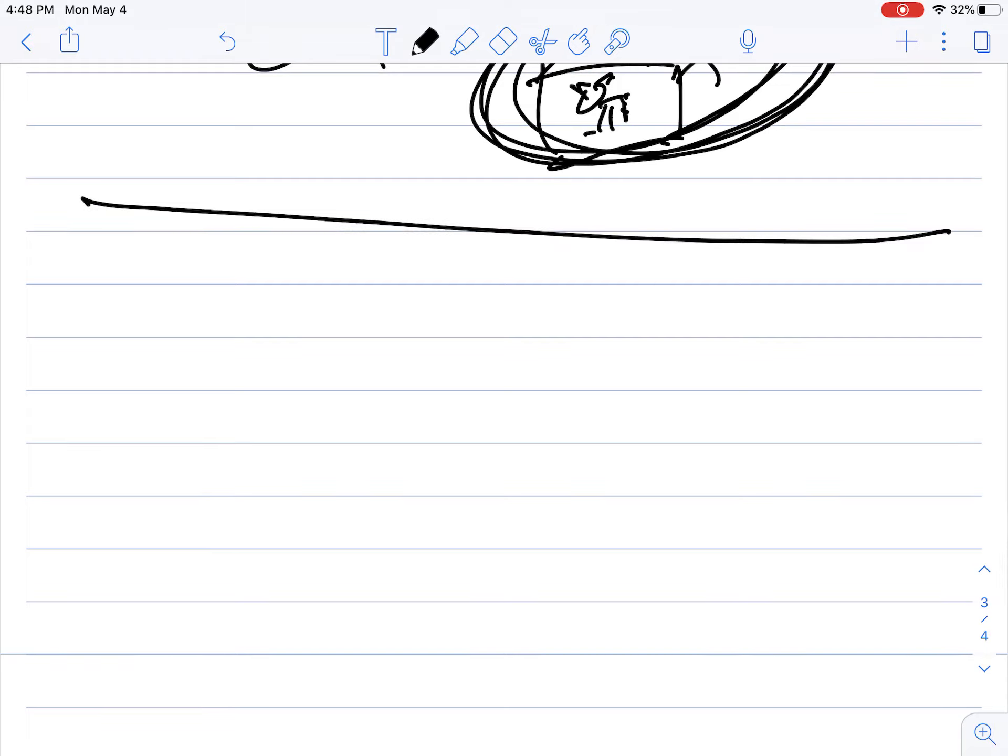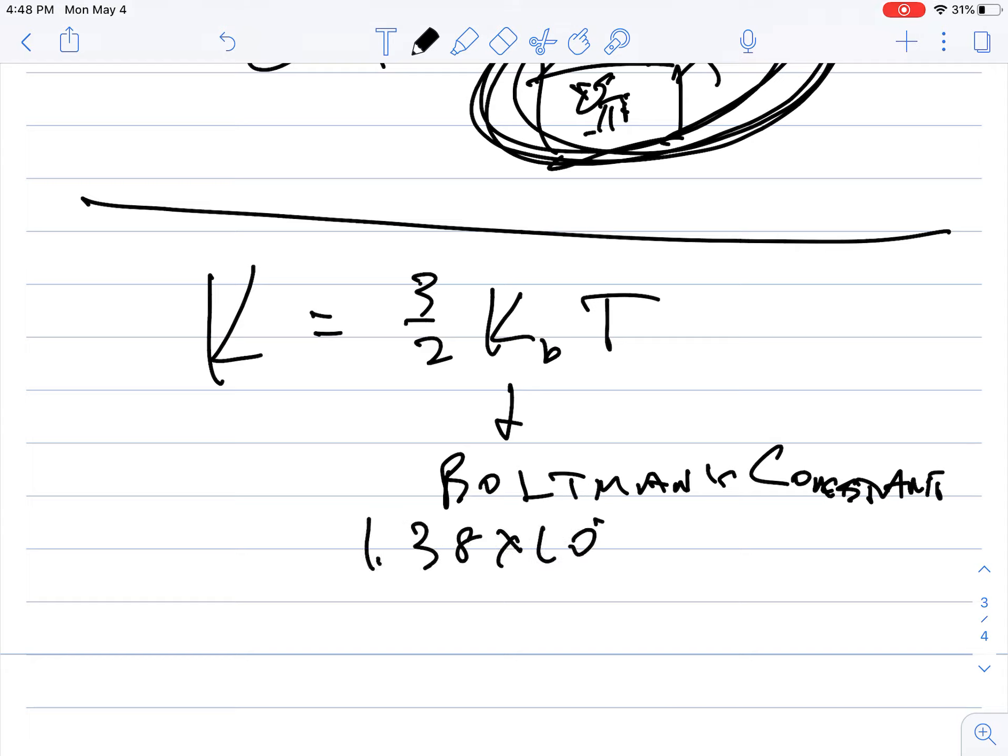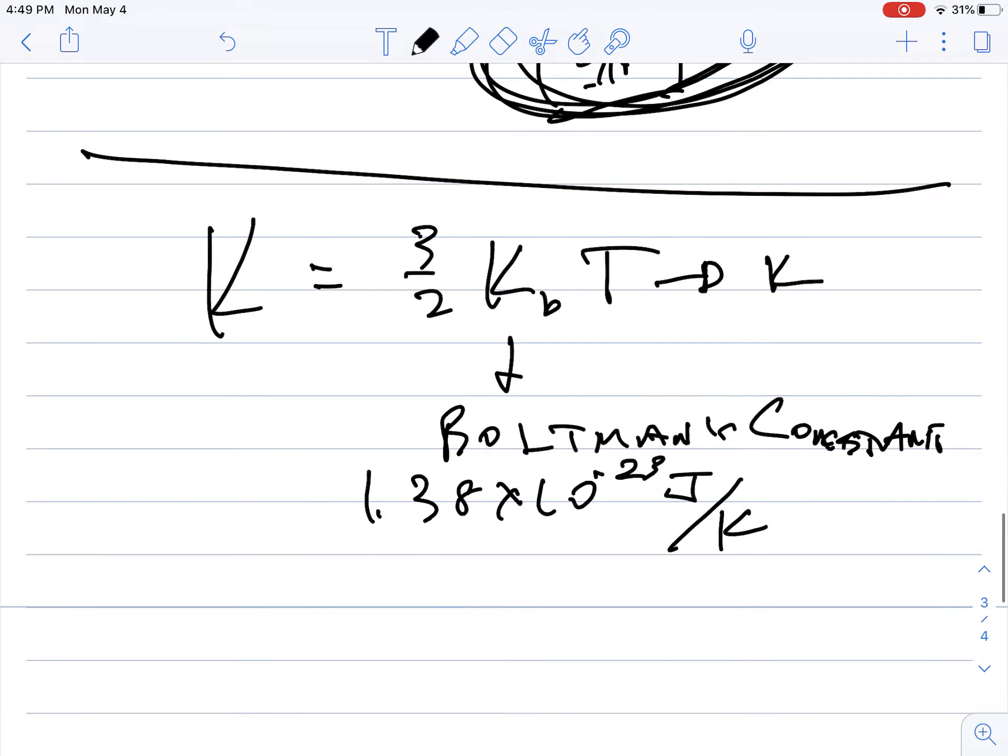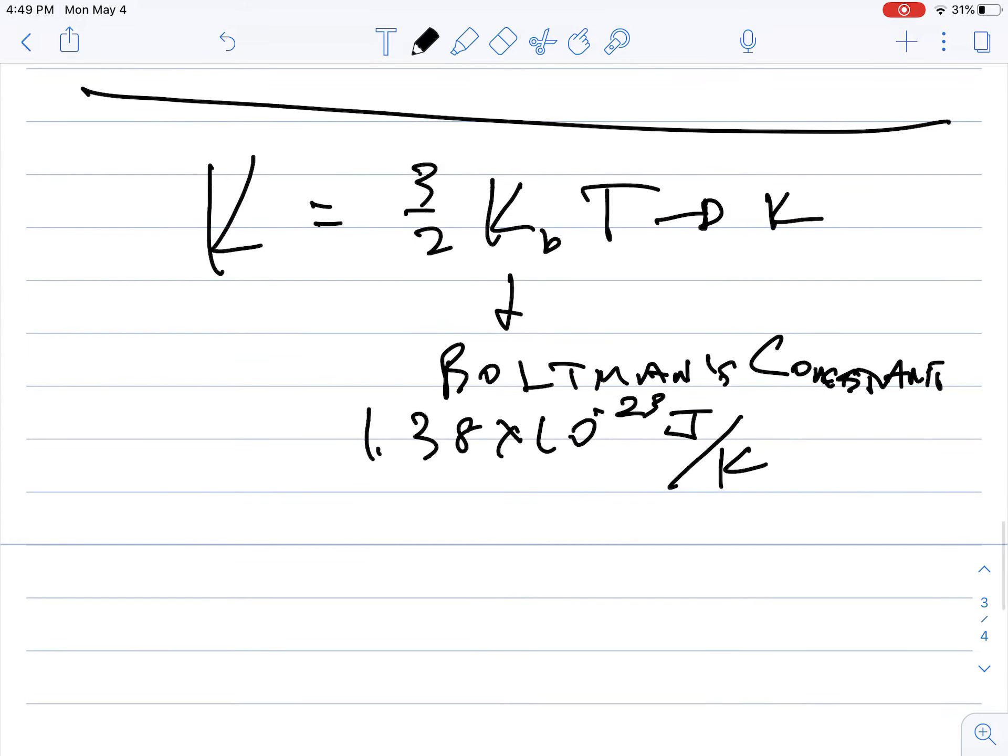So here's the last one that we need to talk about. And this is K equals three halves KB T. This is known as Boltzmann's constant. And this is on your equation sheet. And it is 1.38 times 10 to the negative 23rd joules per Kelvin. This is a temperature that's in Kelvin. So here's the ramifications of this. This is the kinetic energy.